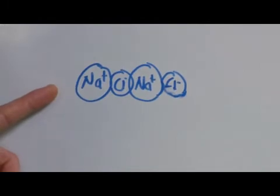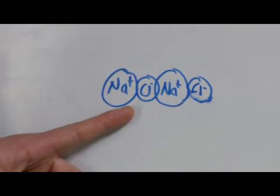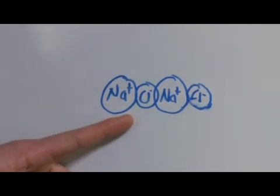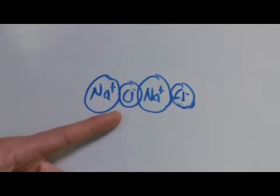Sodium gives up an electron making it positively charged and the chlorine accepts that electron making it negatively charged. So salt is really just a combination of sodium and chlorine ions that are connected into solid structures.